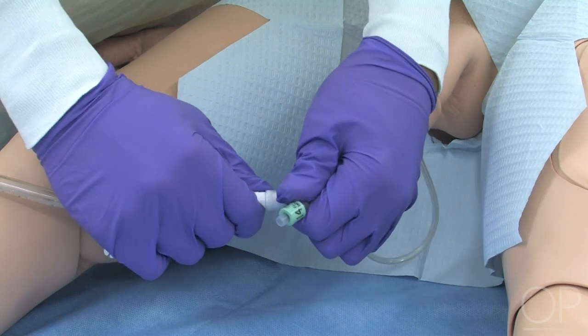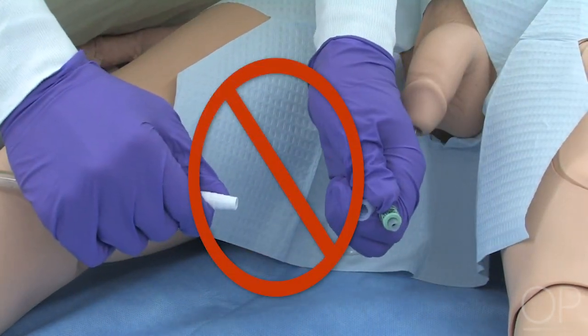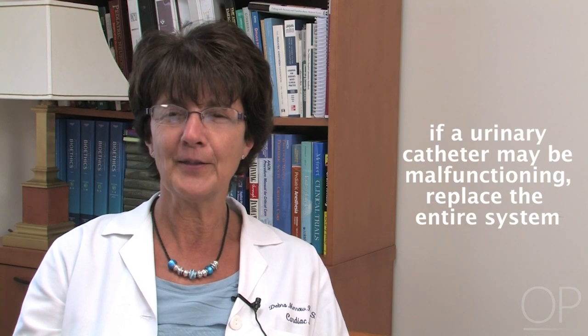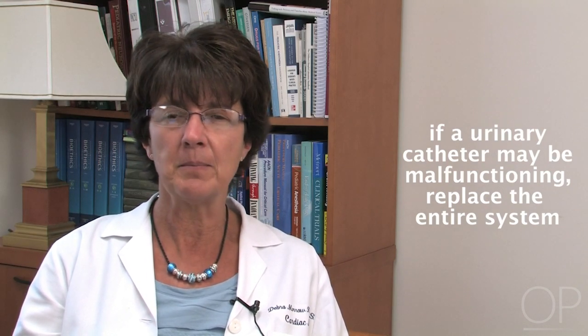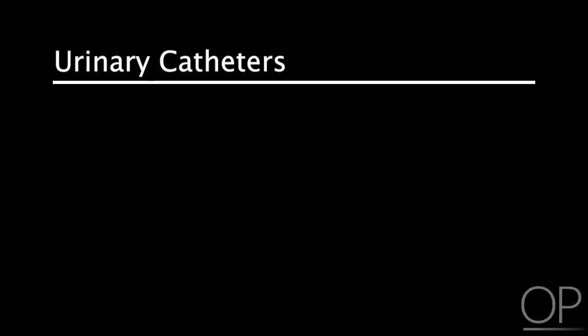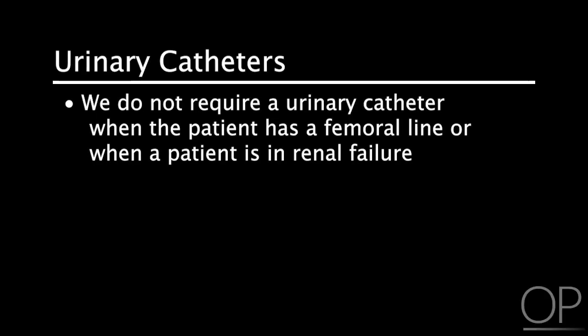The tubing-catheter connection should not be broken — for example, to untangle the catheter — and if it is, disinfect the connection with alcohol first. If we feel that a urinary catheter may be malfunctioning, we would choose to replace the entire system rather than introduce bacteria through repeated irrigations. We also do not require a urinary catheter when the patient has a femoral line or when the patient is in renal failure.